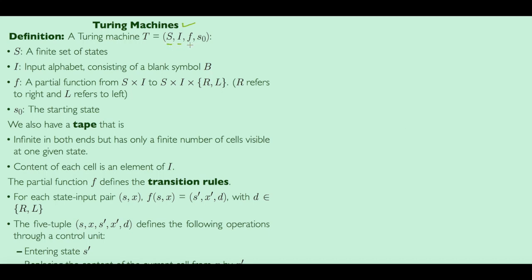What is the difference between this and a finite state automaton? There is no final set — that is the first difference. S is a finite set of states, I is the input alphabet, and another difference is that I also consists of a blank symbol, usually B. There is a partial function F mapping from S cross I to S cross I to a direction, where R refers to right and L refers to left. S0 is the starting state.